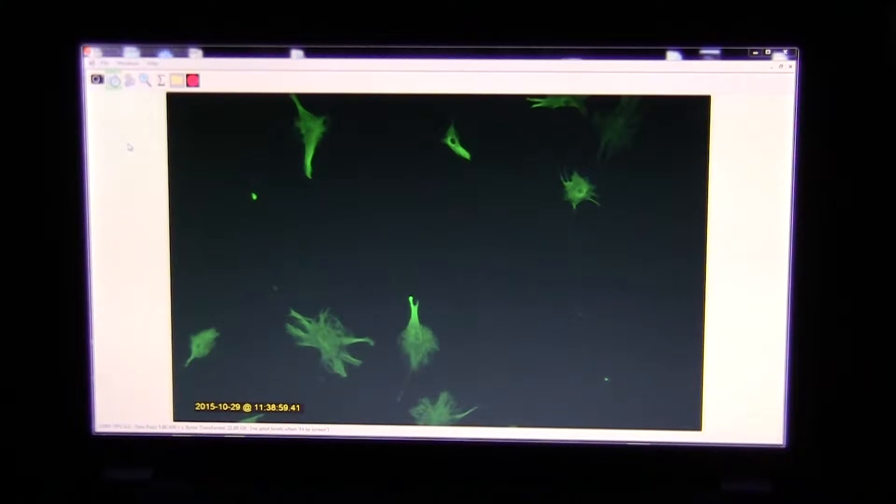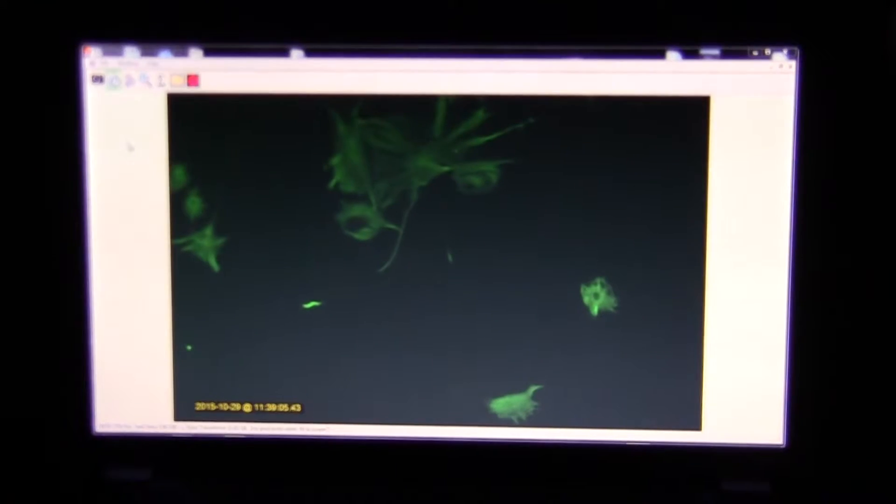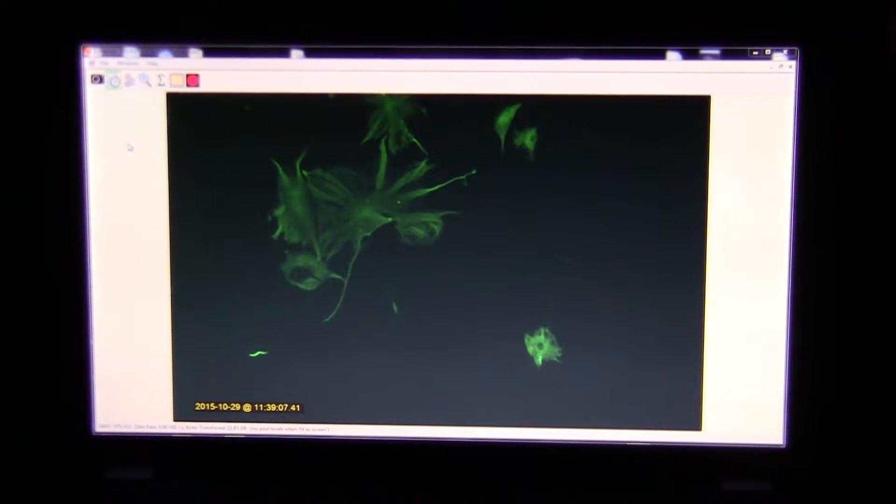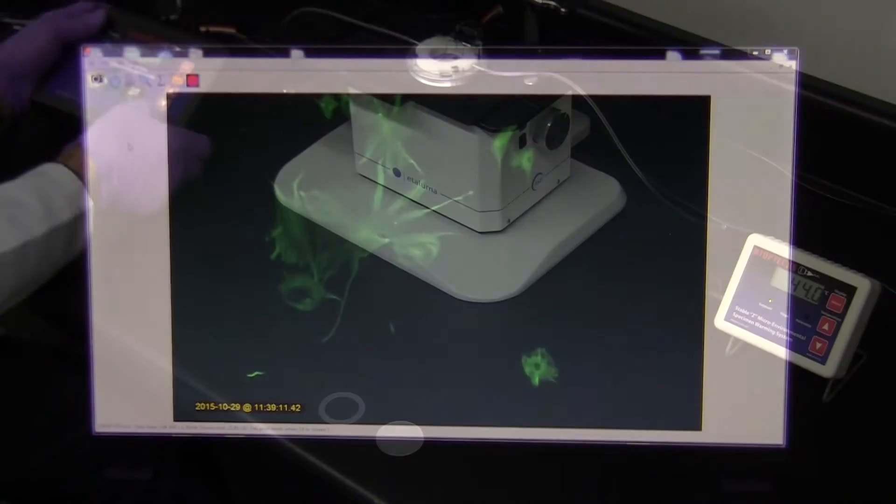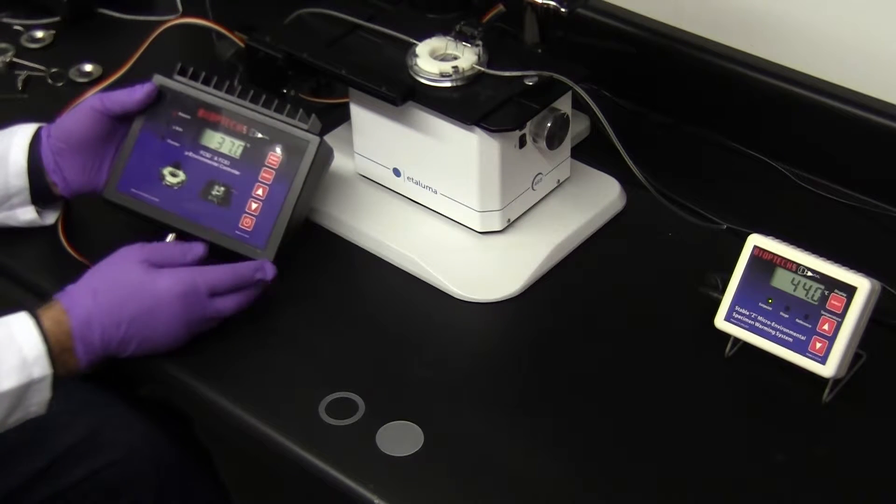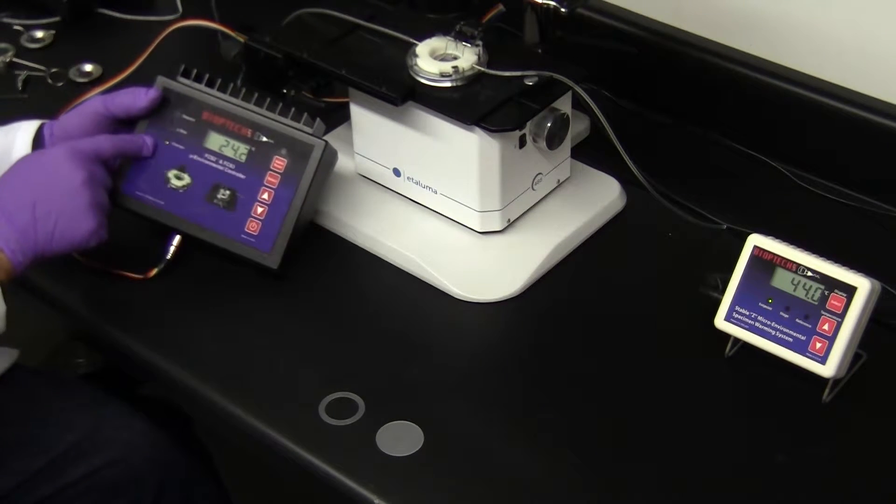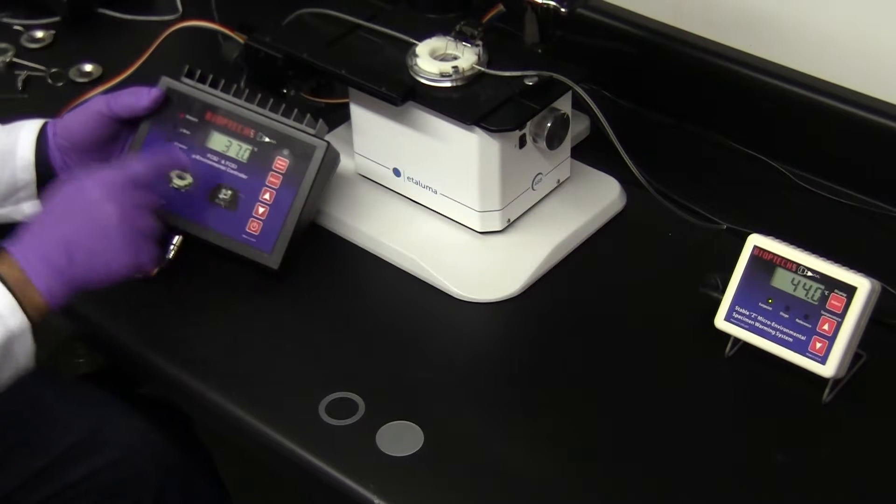The addition of the FCS-2 with its user-definable flow path and uniform temperature control will broaden the scope's utilization for research. The temperature controller is adjustable between ambient and 50 degrees C. It has a fast-acting channel for the microfluidic slide and a second channel for the chamber base.